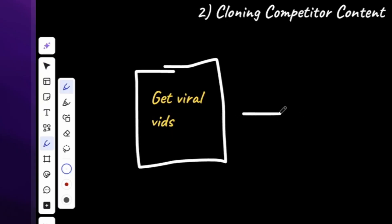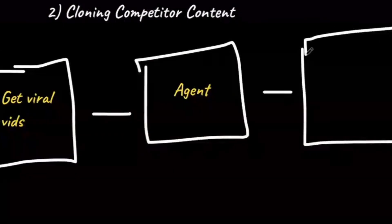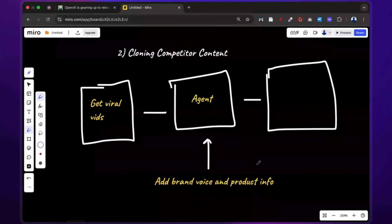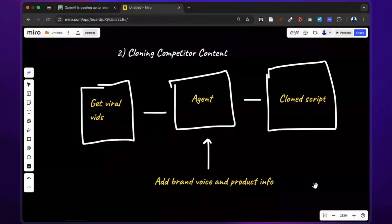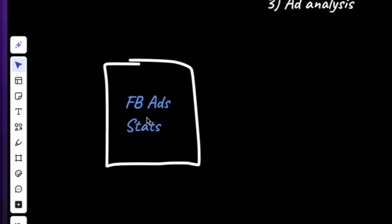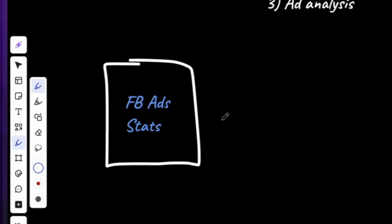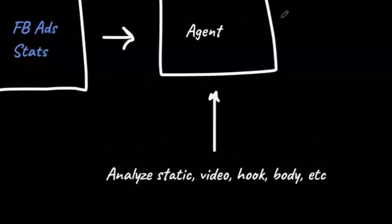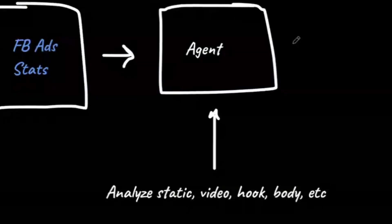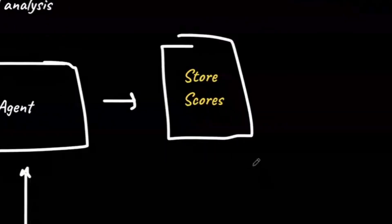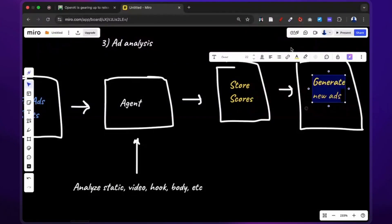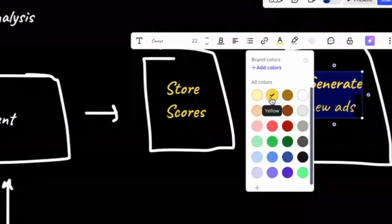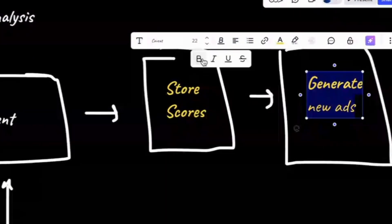Two: cloning competitor content. Scrape or manually find high-performing content from competitors and put the video link into your workflow. You can have an AI agent analyze the video for winning elements and clone it with your product and brand voice. Three: ad analysis. You can have your workflow pull data from your top ads and analyze winning elements. It can break down each component — the static, hook, body, etc. — and score how well each component performed. You can mix and match between components with high scores for new ads, even with statics and videos.